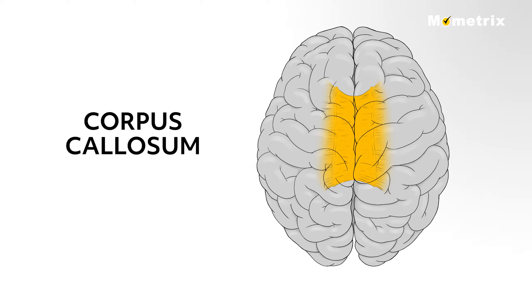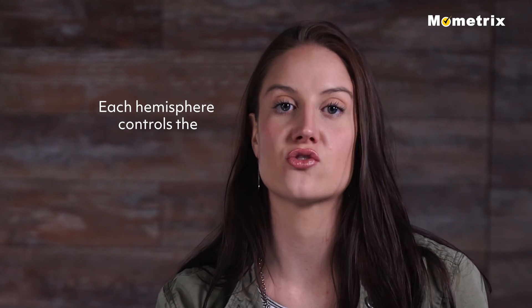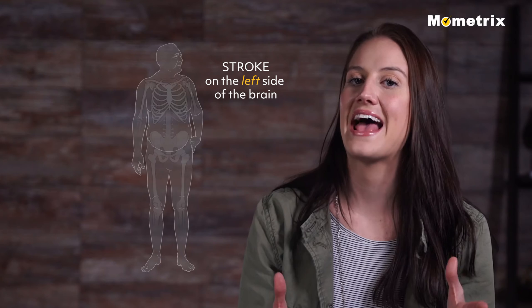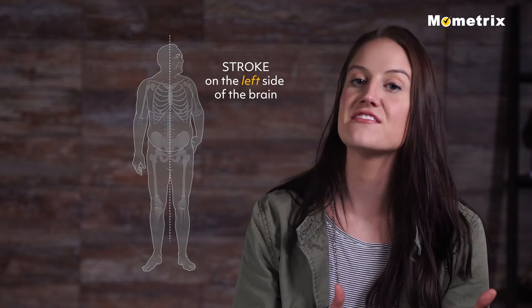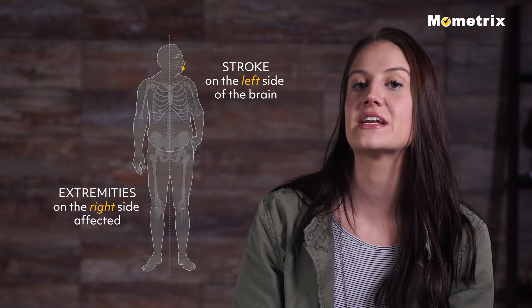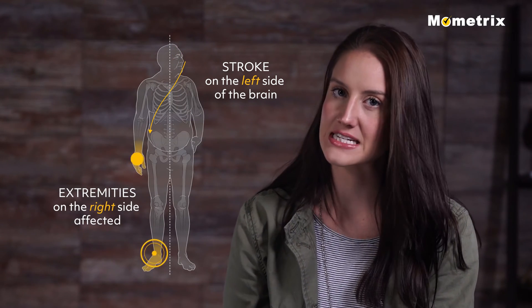The corpus callosum is responsible for transmitting messages from one side to the other. Each hemisphere controls the opposite side of the body. For example, if a stroke-like event happened in the left side of your brain, the extremities on your right side would be affected.